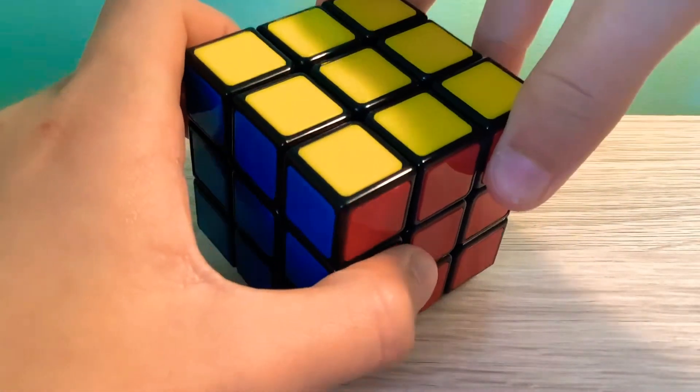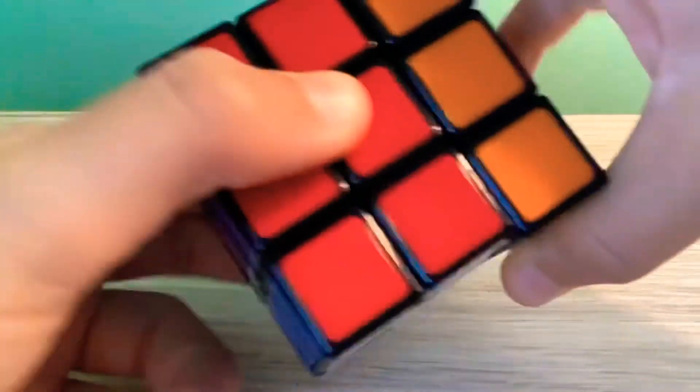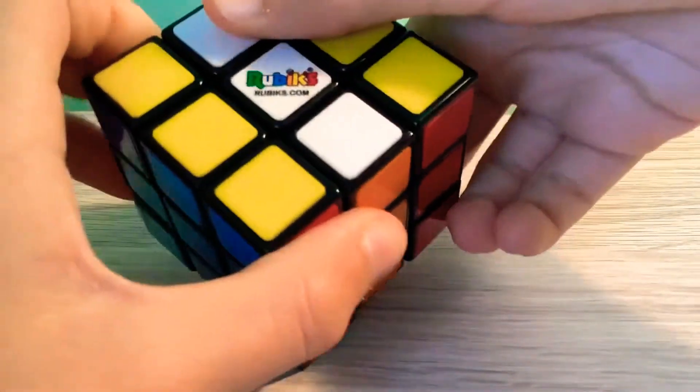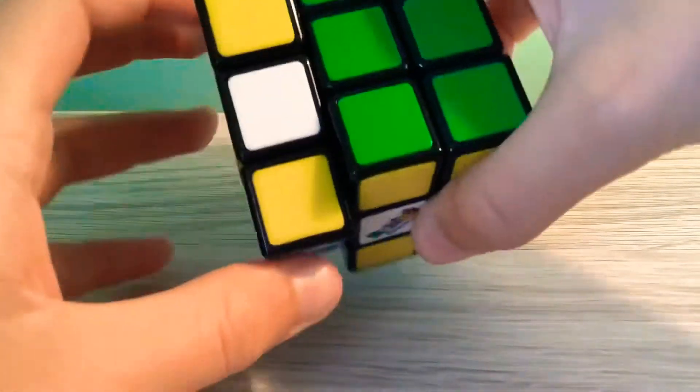First, we're going to start off on the yellow side and we're going to take that vertical on the left side and bring it down all the way 180 degrees. And we're going to do it on the other side, the left and right side, for yellow as well.